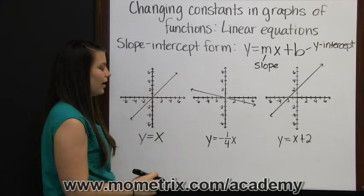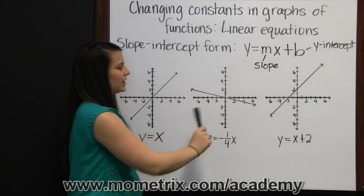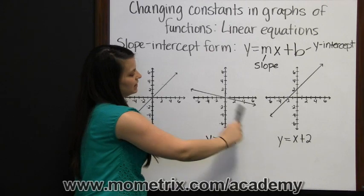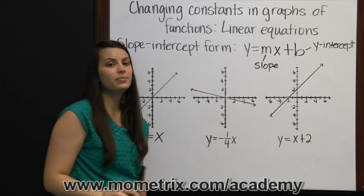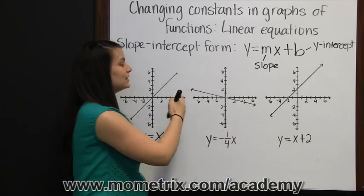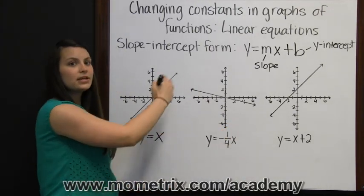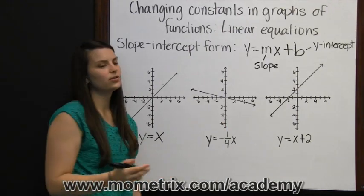The second graph, the slope is negative, negative 1 fourth. So the line is decreasing now from left to right. If the slope is negative, then the line is decreasing from left to right. Positive slope, increasing. Negative slope, decreasing.